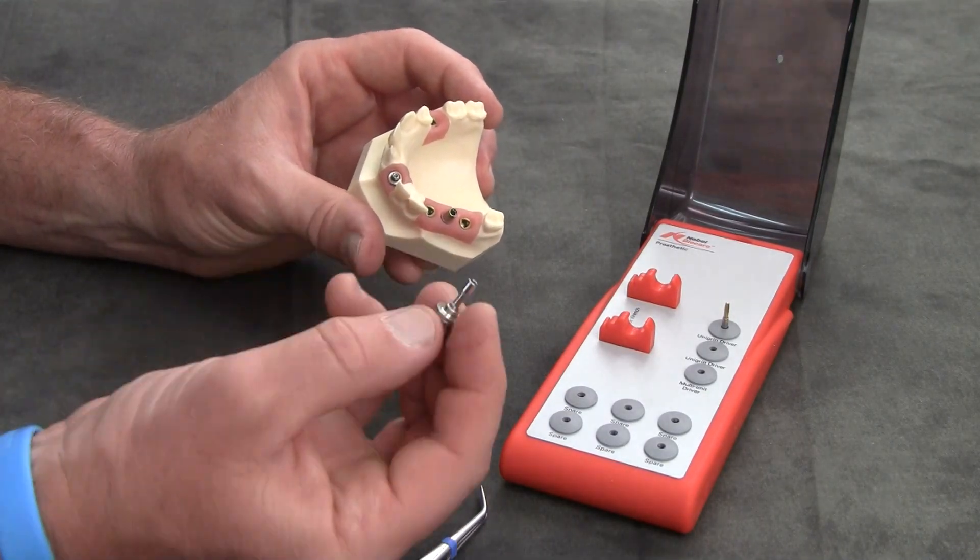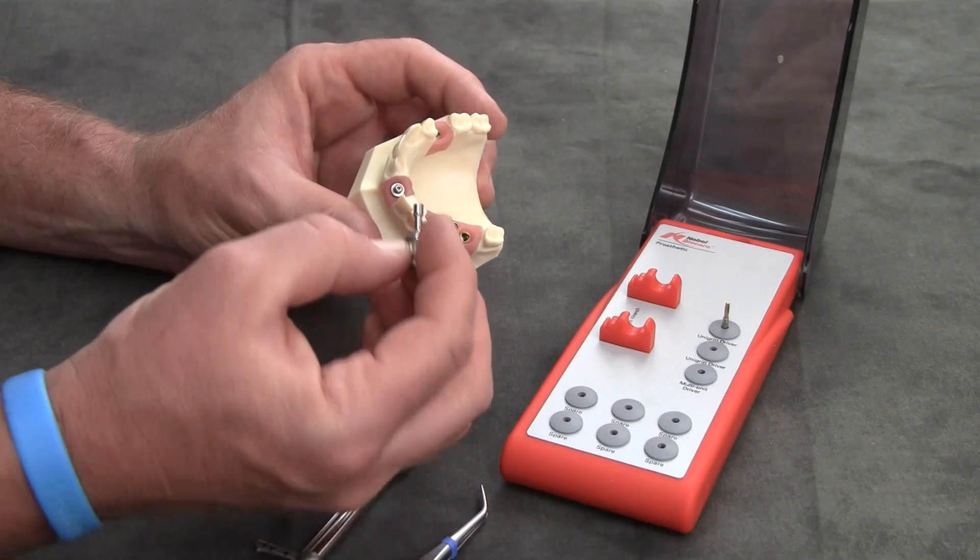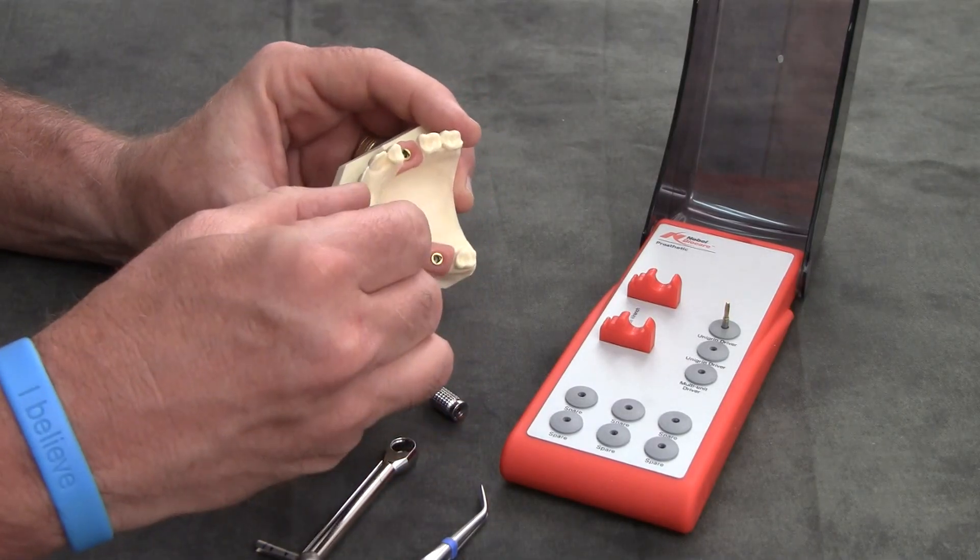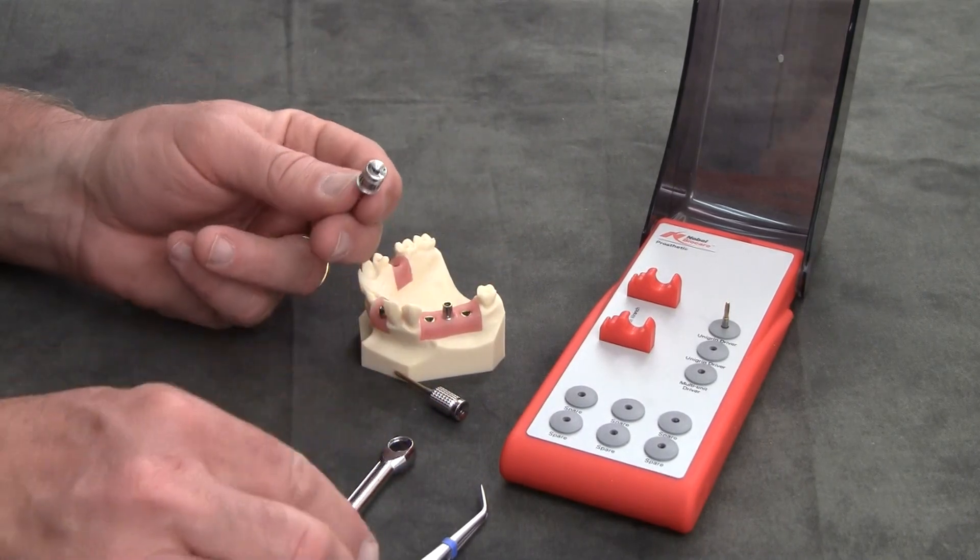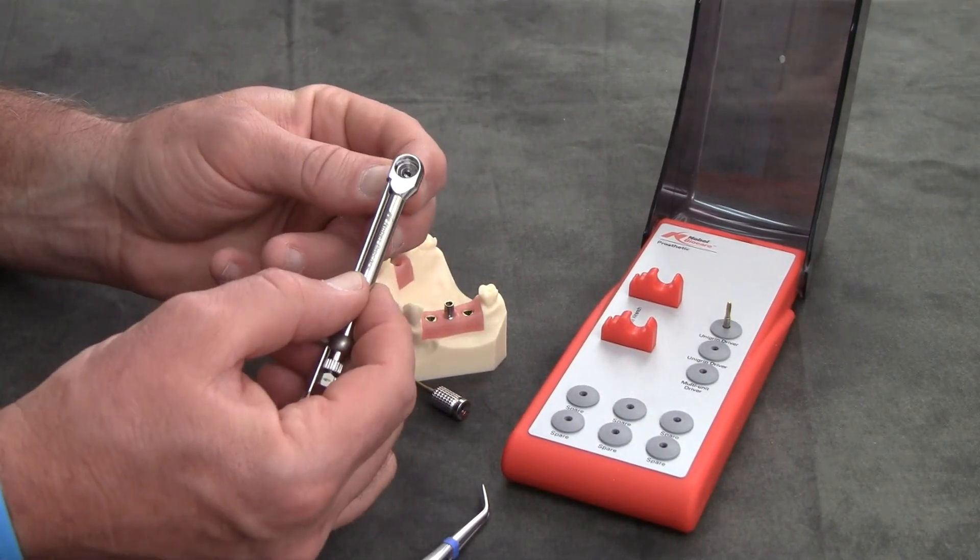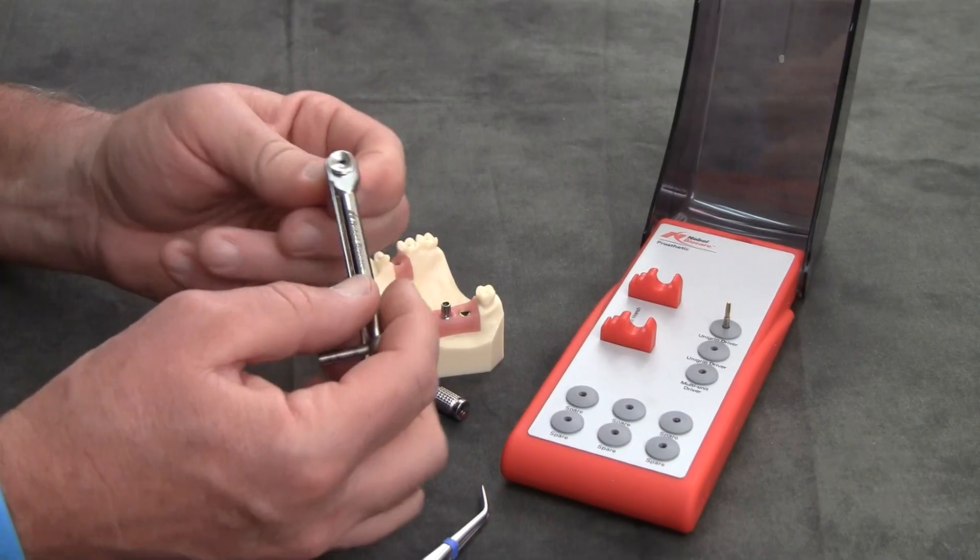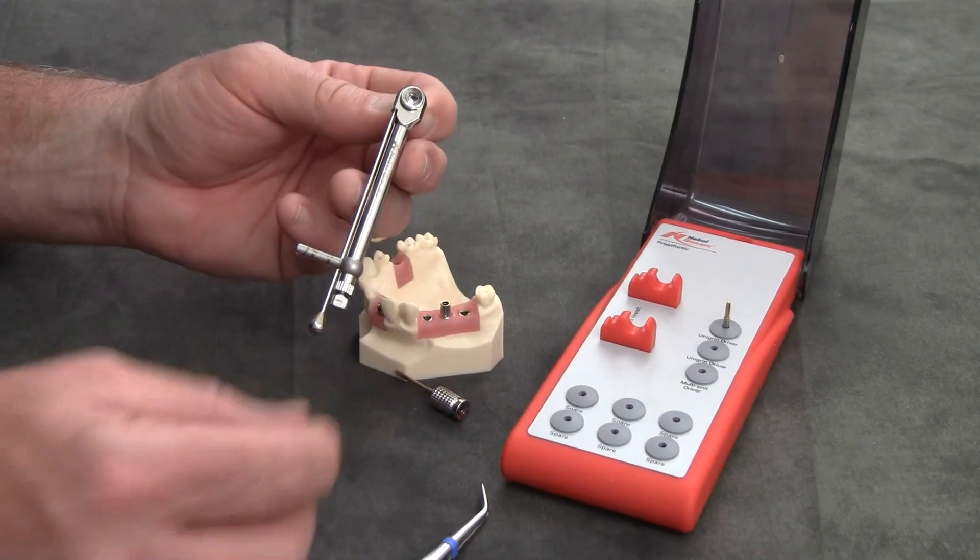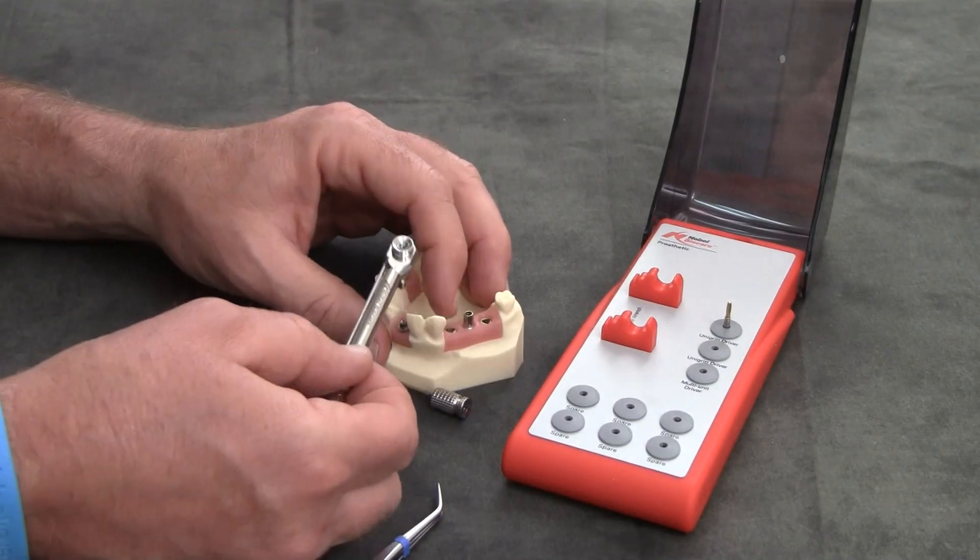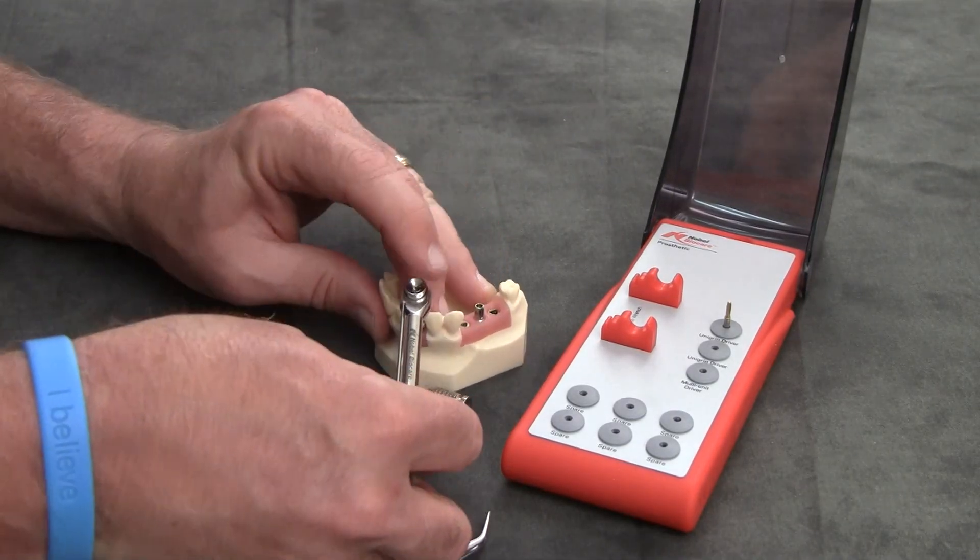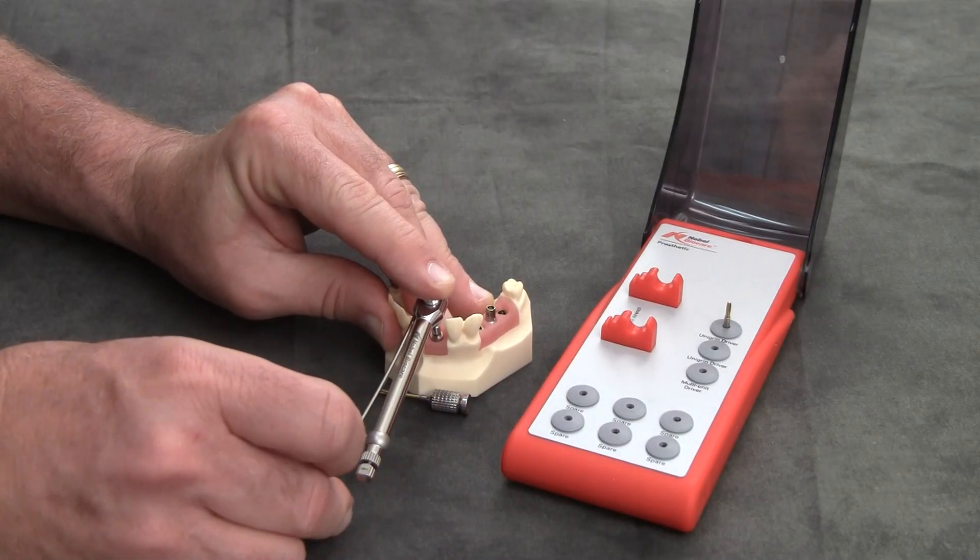And now you'll use the multi-unit driver and tighten as tightly as you can by hand. Now we'll use the torque wrench again, slipping it over until it hits the bottom, making sure that the directional arrow is toward us, take it to the abutment.